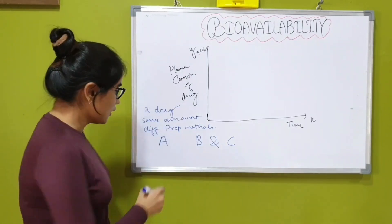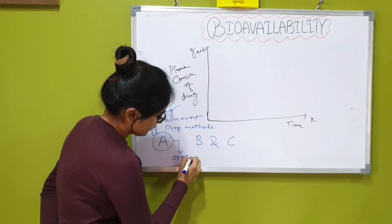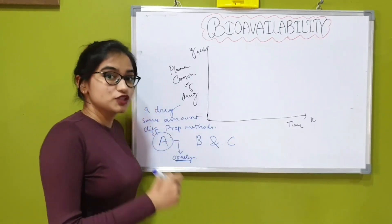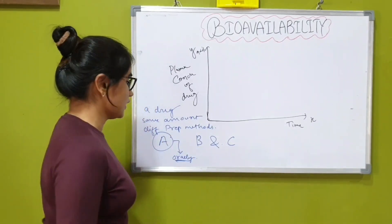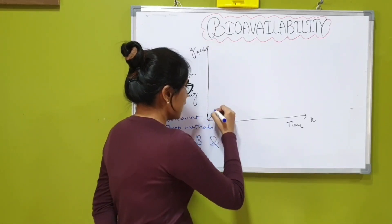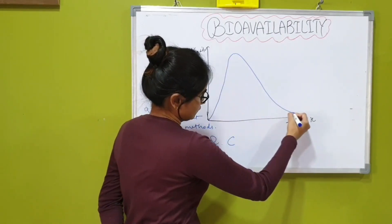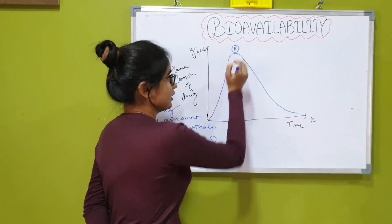Now talking about the preparation A. Let's say you took this preparation orally. Now it's going to get absorbed in your systemic circulation. So the plasma concentration of the drug goes up with time and then it falls down slowly. This is the concentration time graph of A.